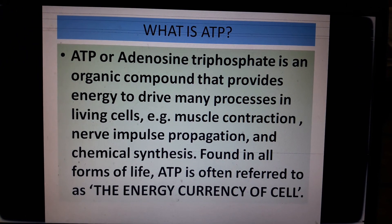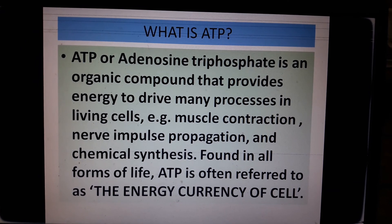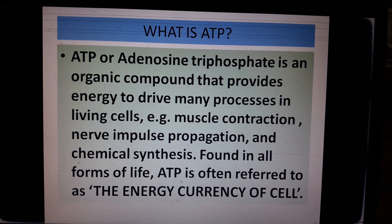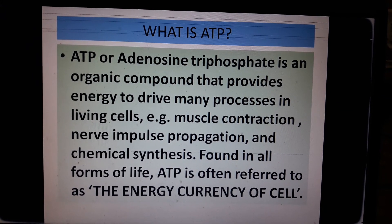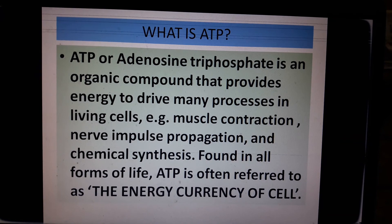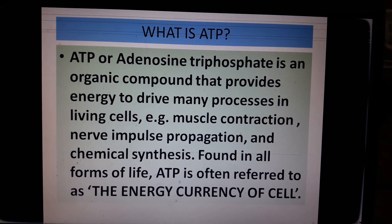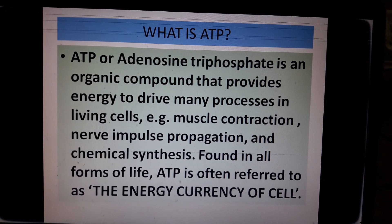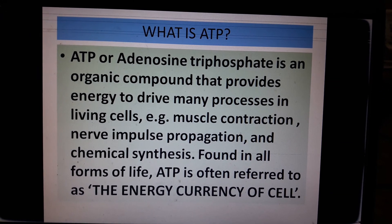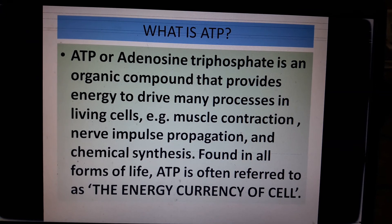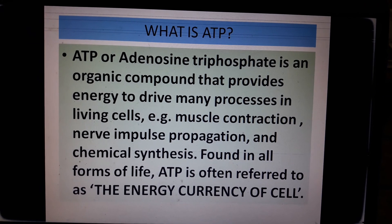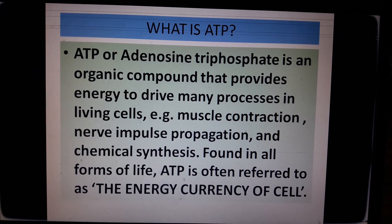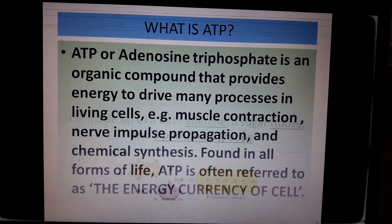ATP, or adenosine triphosphate, is an organic compound that provides energy to drive many processes in living cells — for example, muscle contraction, nerve impulse propagation, chemical synthesis, digestion, and so on. Because it is found in all forms of life, it is also called the energy currency of cells.